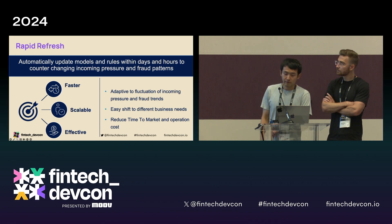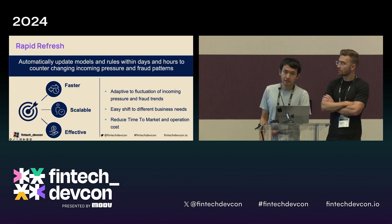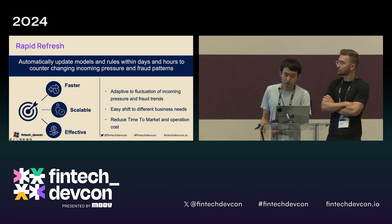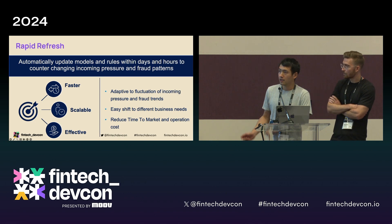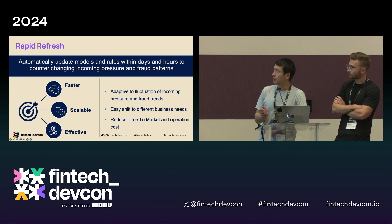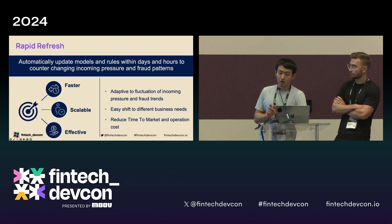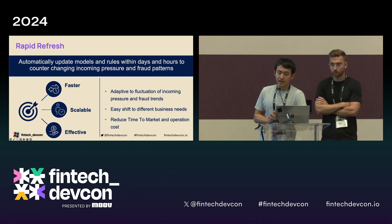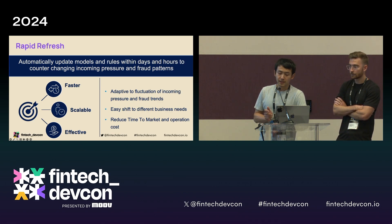Our rapid refresh framework aims to automatically update our models and rules within days or even hours to counter changing business pressure and mitigate emerging fraud patterns. There are three factors in our consideration. The first is speed: our solutions must adapt quickly to fraud trends and incoming pressure, referring to both the time of detection and the time to reaction. The second is scalability: the framework should be easy to adapt to different business areas, enabling us to extend the benefits across all domains in our organization.